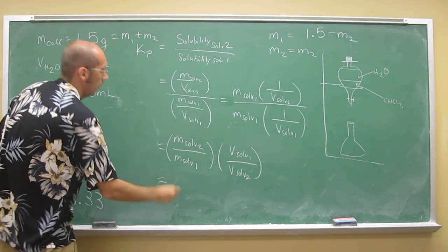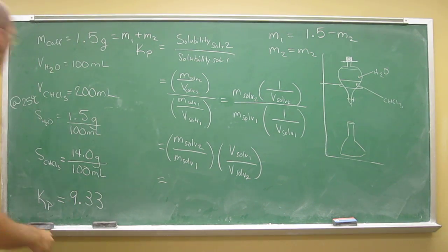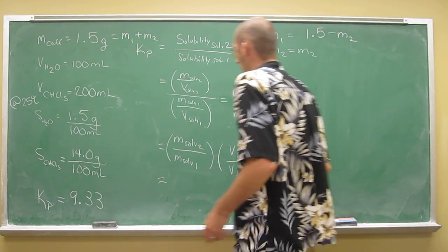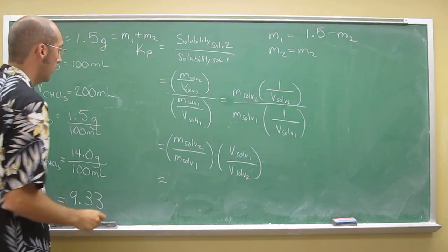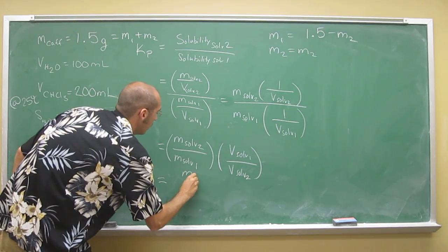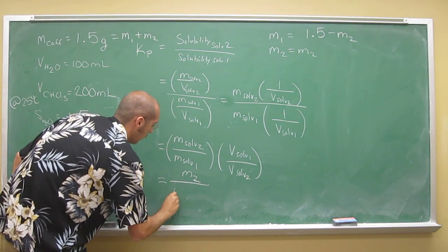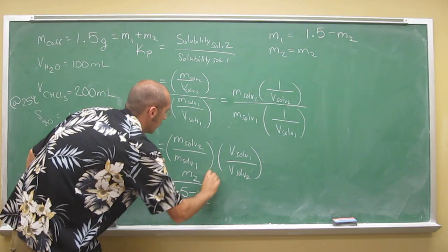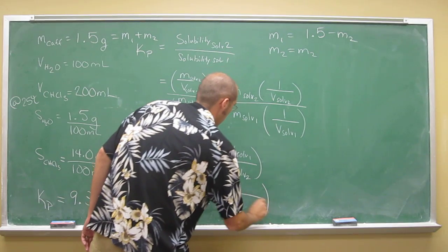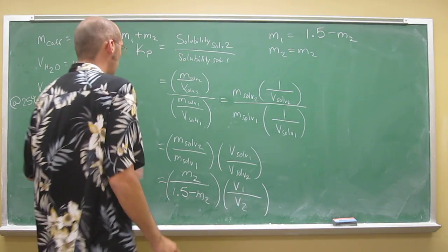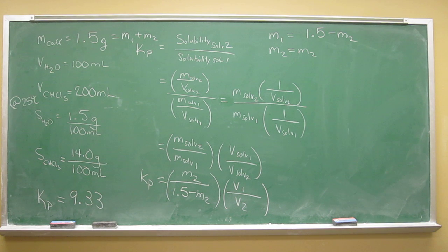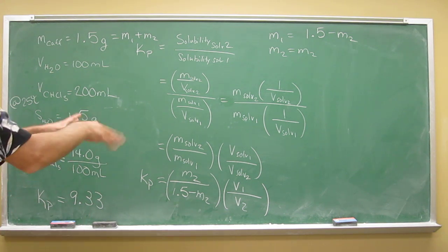So now let's put all that information in. Probably have to draw some diagram here. So what are we really looking for? M2. So what do we got? We've got M2 divided by 1.5 minus M2, and then V1, V2. And this is Kp over here. So let's just plug and chug, and then we'll solve for M2 eventually.